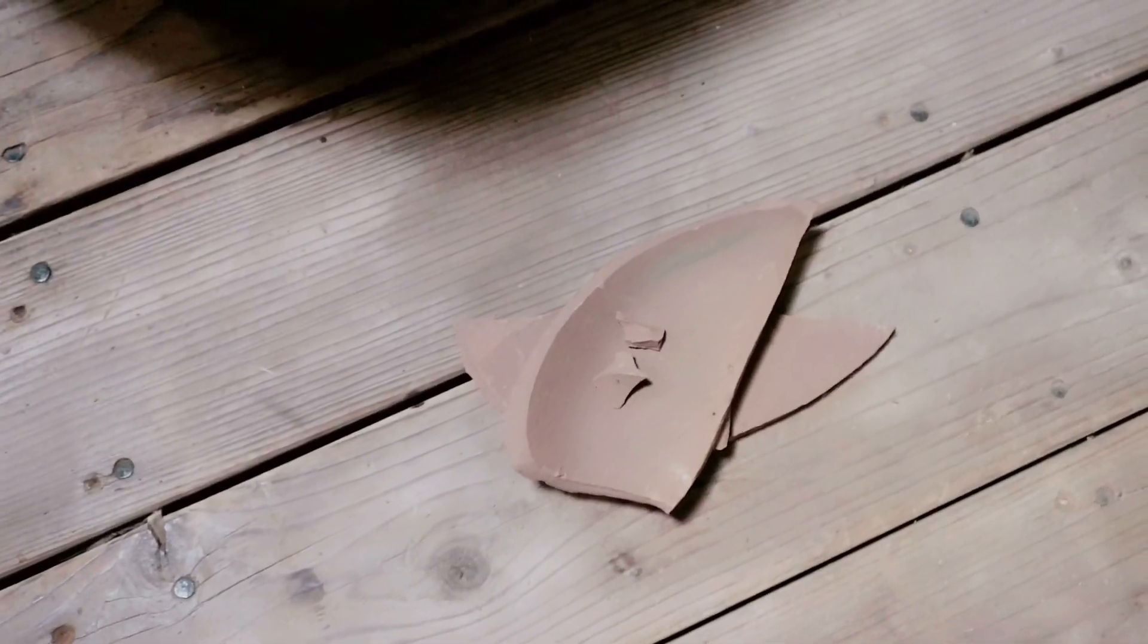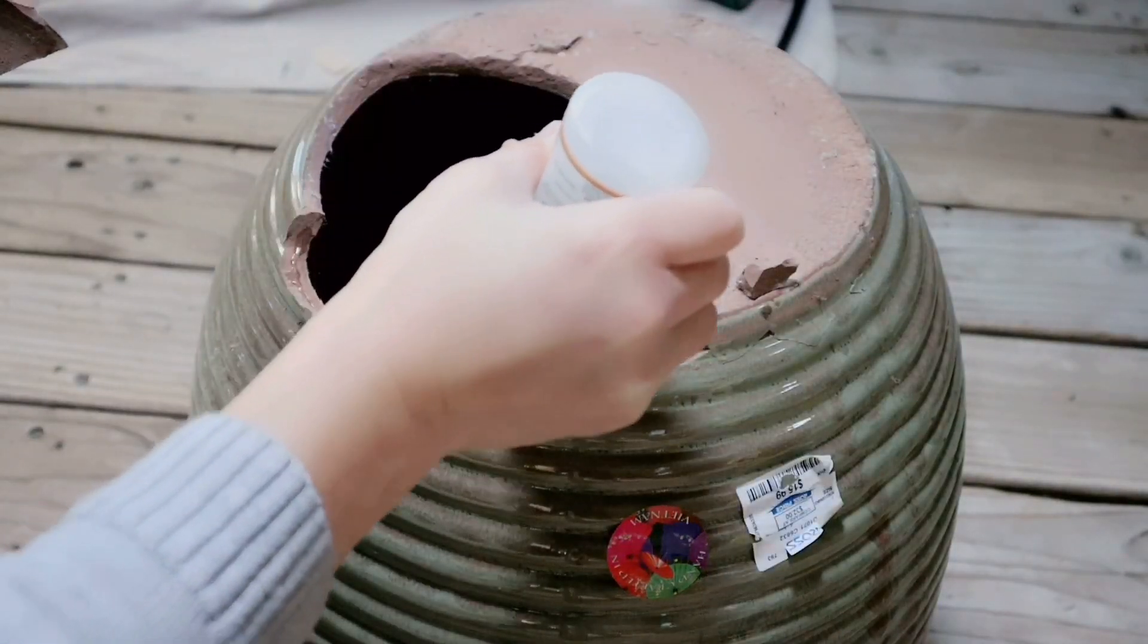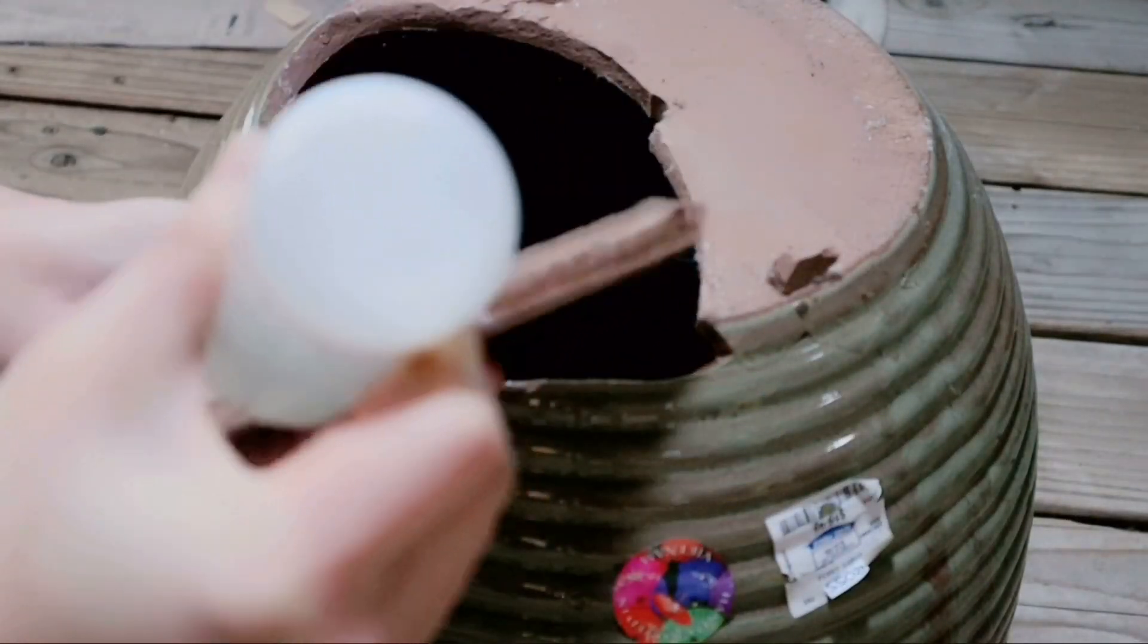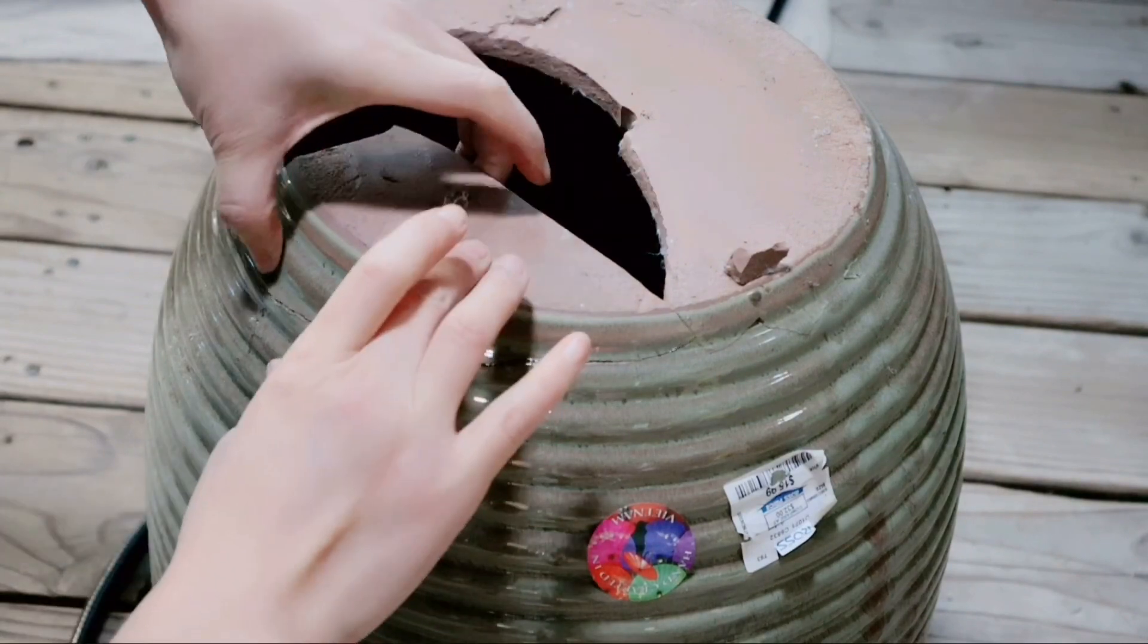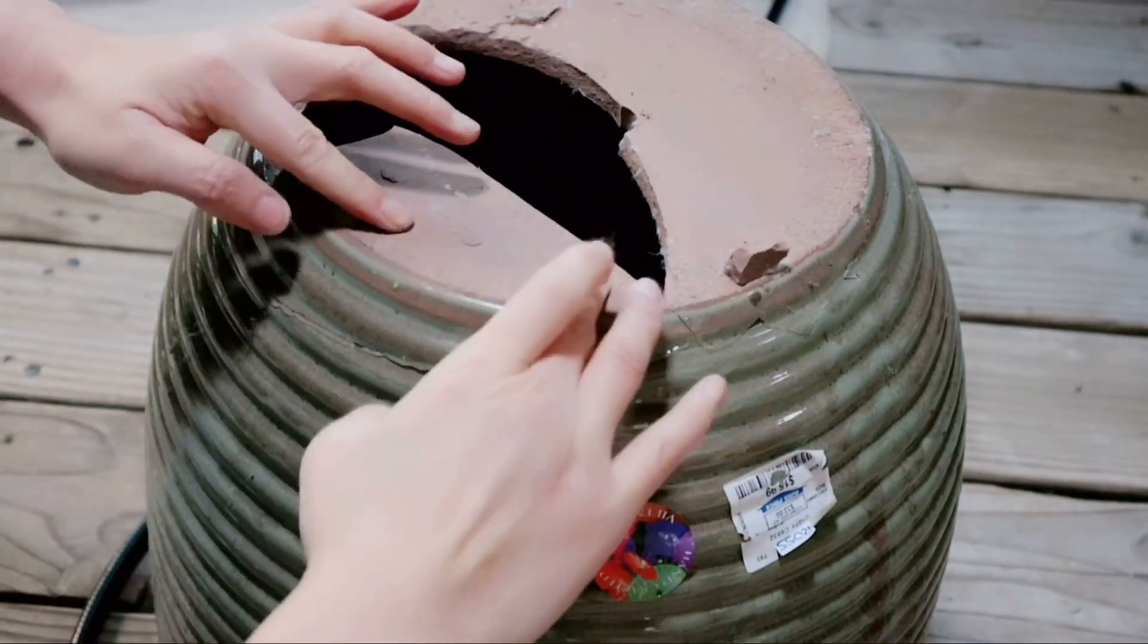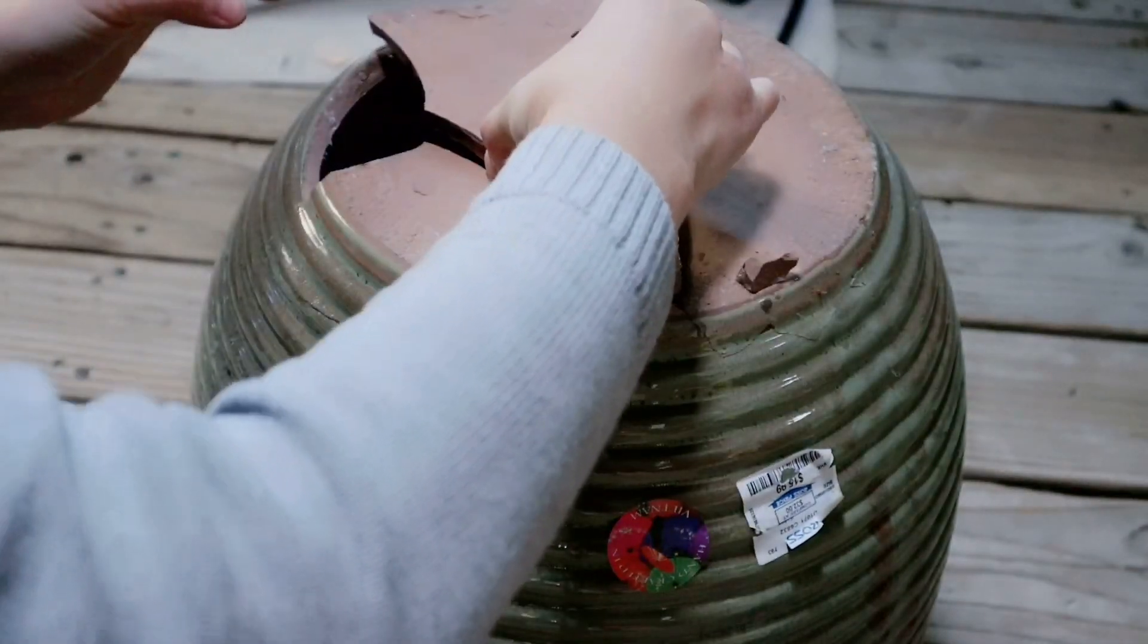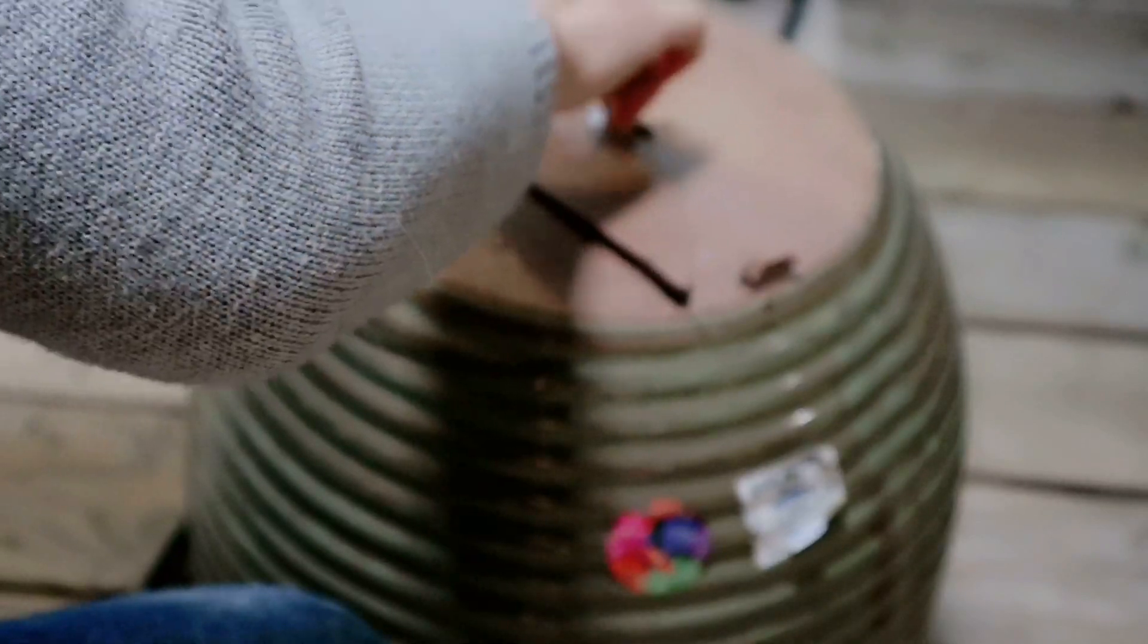This one unfortunately when I was unloading from the car slipped through my hands and got broken on the bottom. So it's been in my garage for a long time. I want to try to fix this pot today so the ficus tree can stand in it. I'm using the same glue I used for the door trim. The instructions say it also works on ceramic.